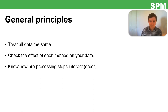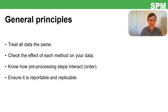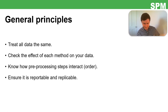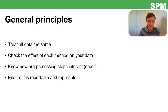It's also good to think about how different pre-processing steps interact — I'll highlight these as we go along. Most importantly, ensure you're able to report what you've done to people and be willing to defend it, because a reviewer may say 'I wouldn't have done that — why did you?' You should be able to justify each step you take and make sure it's replicable. For manual steps, don't just say you visually inspected bad trials — try to say what criteria you used to determine a bad trial.